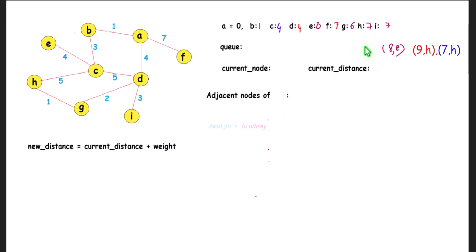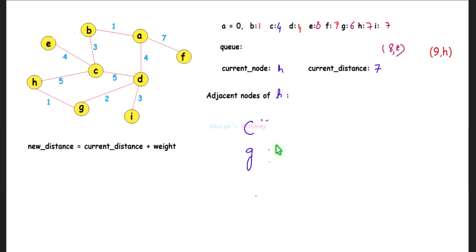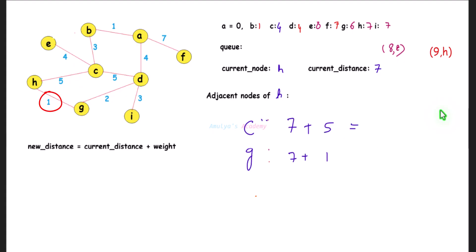Remove (7, H) from the queue. Current node is H with distance 7. Adjacent nodes of H are C and G. New distance to C: 7 + 5 = 12 — C's minimum distance is 4, so skip it. New distance to G: 7 + 1 = 8 — G's distance is 6, so skip it.